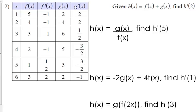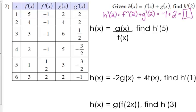So let's look at another table. The first example is exactly the same: h of x is f of x plus g of x. So h prime of 2 here would be f prime of 2 plus g prime of 2. For this table of values, f prime of 2 is negative 1, g prime of 2 is 2, so that value is positive 1.